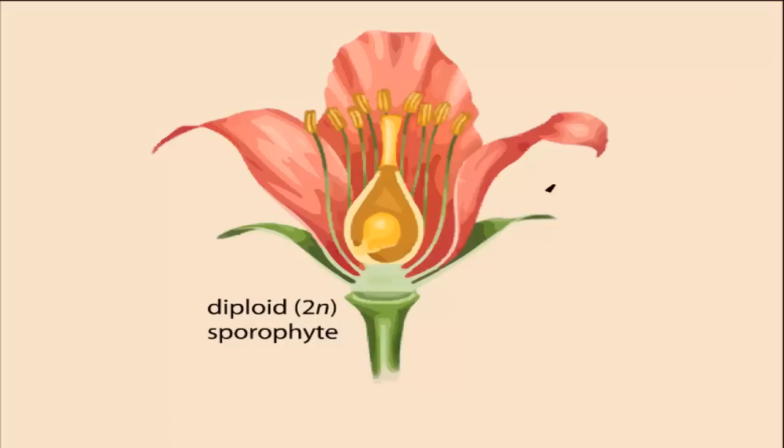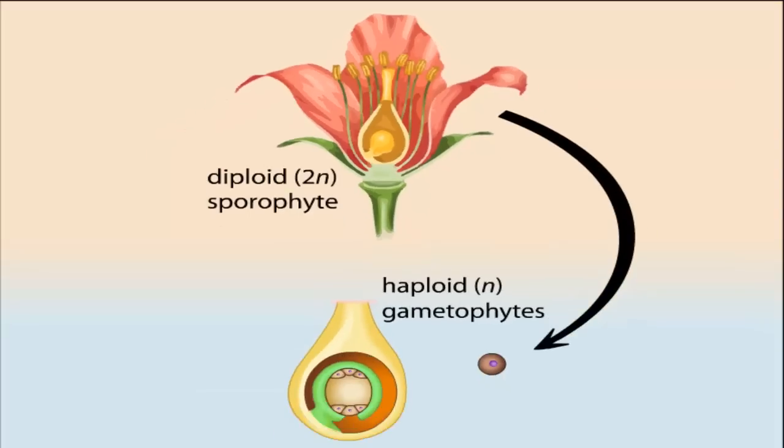As with all land plants, the life cycle of an angiosperm alternates between a diploid sporophyte generation, represented here by the flower of the mature sporophyte plant, and a haploid gametophyte generation.